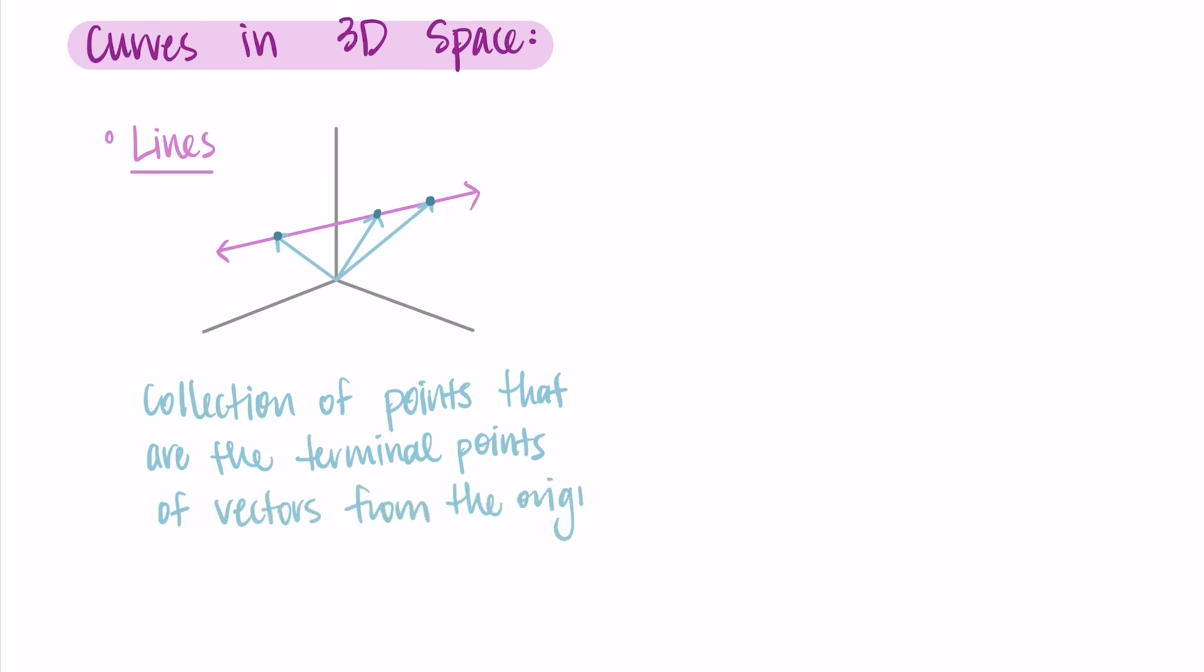And so each t value here, each parameter value, will give us one point on the line because it corresponds to one vector.